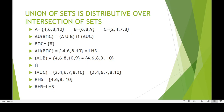For distributive union over intersection: set A = {4, 6, 8, 10}, set B = {6, 8, 9}, set C = {2, 4, 7, 8}. Rule: A union (B intersection C) equals (A union B) intersection (A union C). B intersection C = {8}. A union (B intersection C) = {4, 6, 8, 10} — the left-hand side. A union B = {4, 6, 8, 9, 10}. A union C = {2, 4, 6, 7, 8, 10}. (A union B) intersection (A union C) = {4, 6, 8, 10} — the right-hand side. LHS equals RHS.